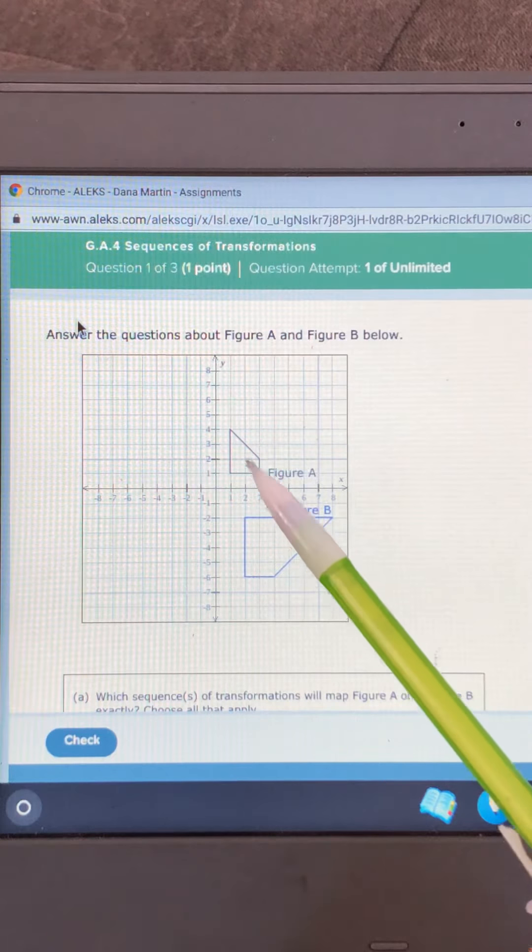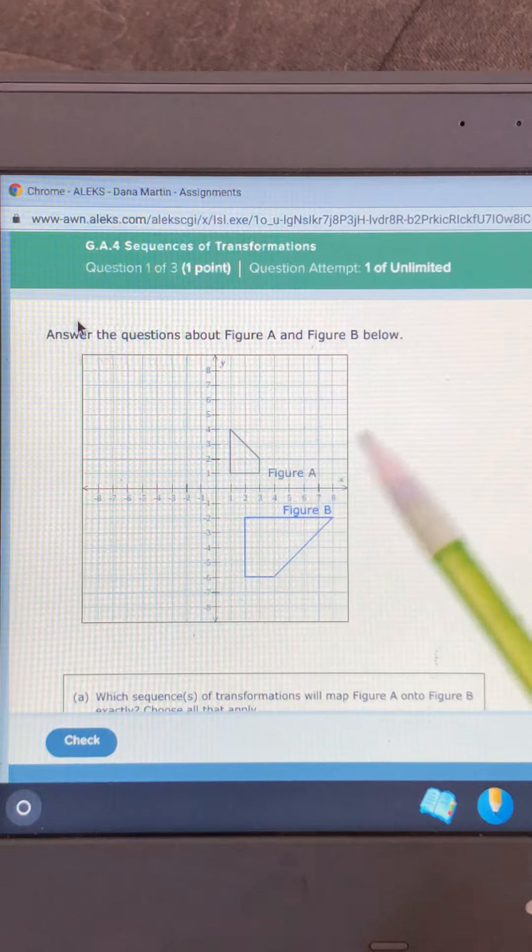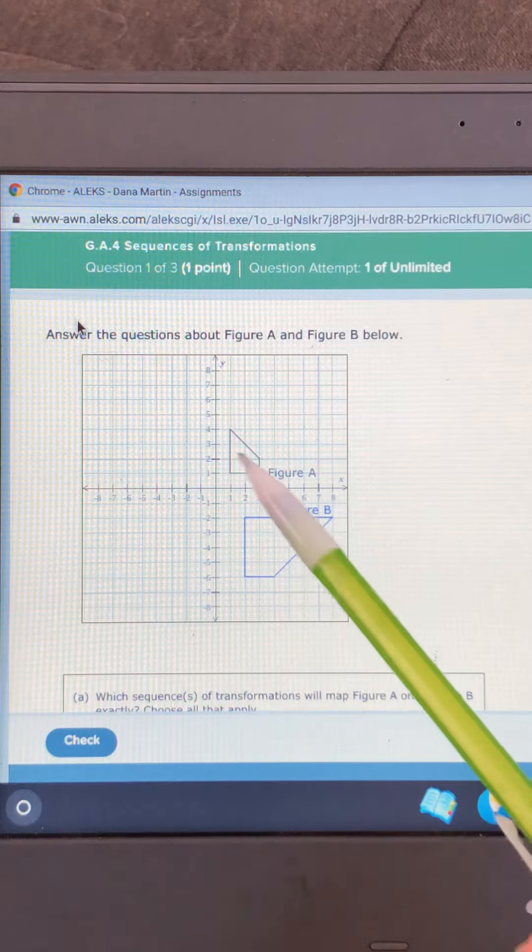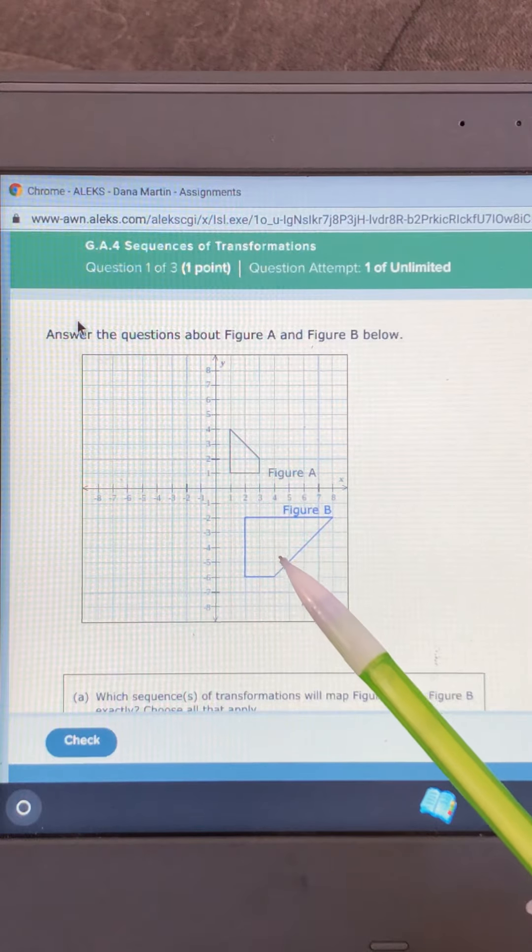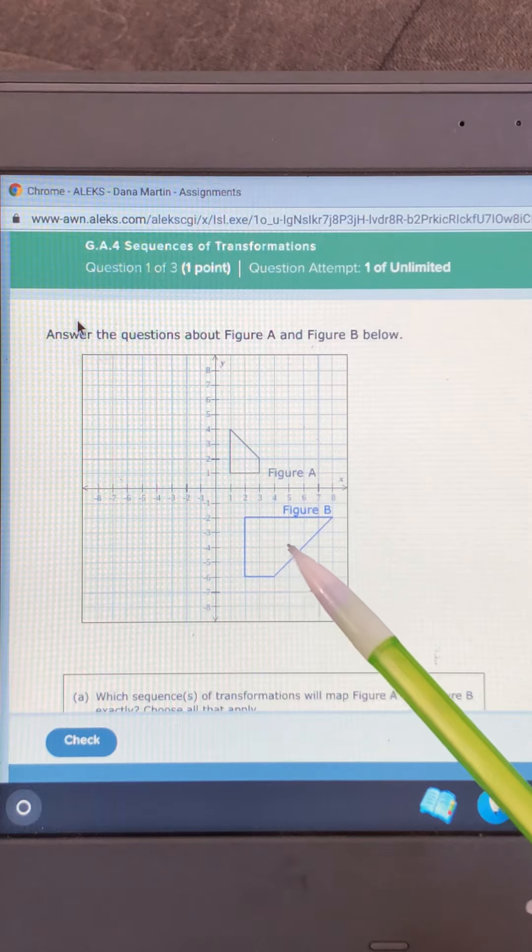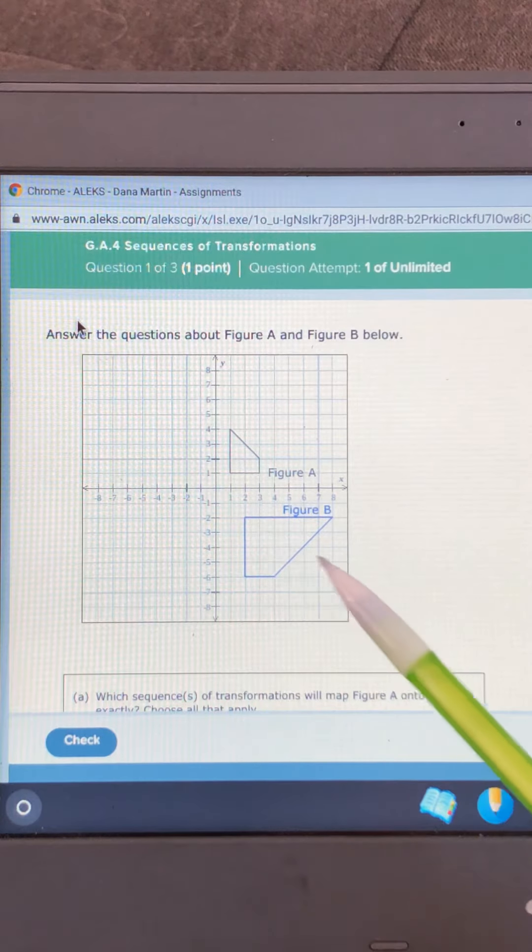You have a shape here, figure A, and then it ends up as figure B. So we've done some things. Can you tell that we've dilated it? Here's the original and here's the final. So we know we've done a dilation. We've changed the size of it.